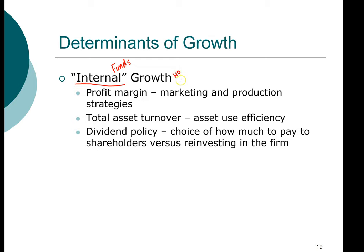No external funding means no new borrowing — you will not take on new debt, and you will not issue any new equity. All the funds used to finance growth in this strategy come strictly internally, meaning through operations of the firm. The two main drivers are profitability — the more profitable a firm is, the more money it can generate — and efficiency, which comes from total asset turnover. The more efficient a company is, the more funds it can generate.